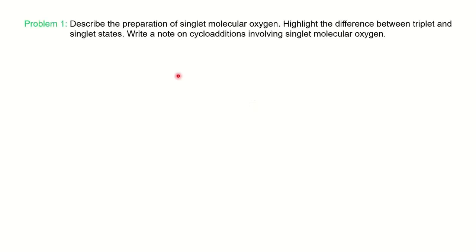Our first question is: describe the preparation of singlet molecular oxygen, highlight the difference between triplet and singlet state, and write a note on cyclohexadienone involving singlet molecular oxygen. This question belongs to the 5 to 6 marks category.